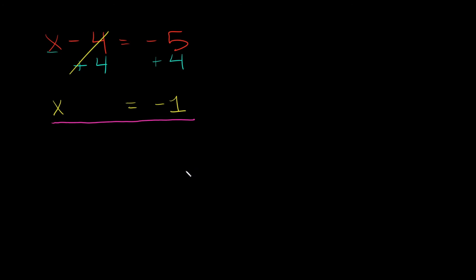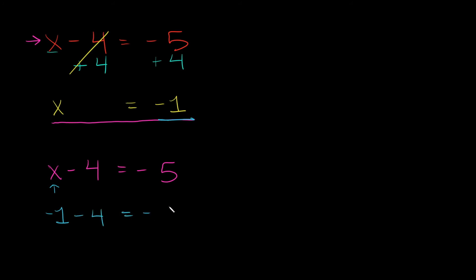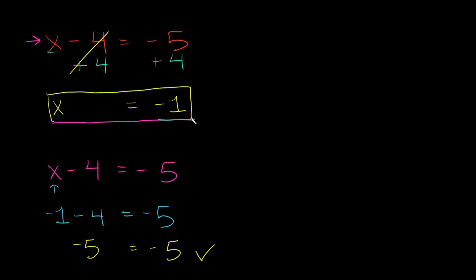Is that the correct answer? We're going to plug it into the original equation and see if it works. Our original equation was x minus 4 is equal to negative 5. I'm going to plug in negative 1 for x: negative 1 minus 4 is equal to negative 5. Negative 1 minus 4 simplifies to negative 5, and we have negative 5 on the other side. Is negative 5 equal to negative 5? Yes. When we plugged in negative 1 for x, we got a balanced equation — our answer was correct.